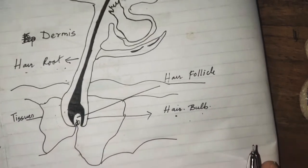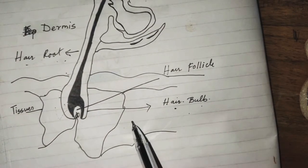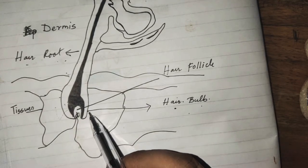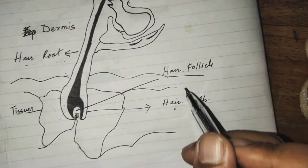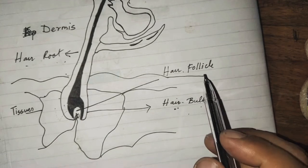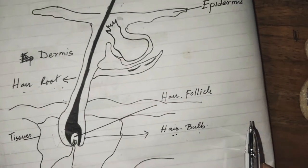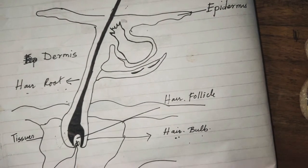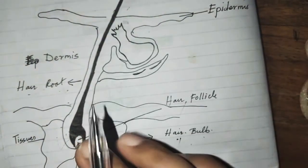The hair bulb is the lower part of the hair root which expands in the form of a bulb shape. The hair follicle and hair bulb are collectively responsible for the growth of the hair.